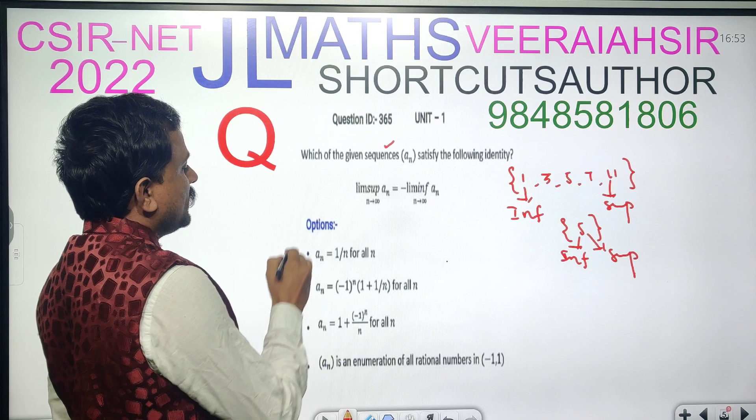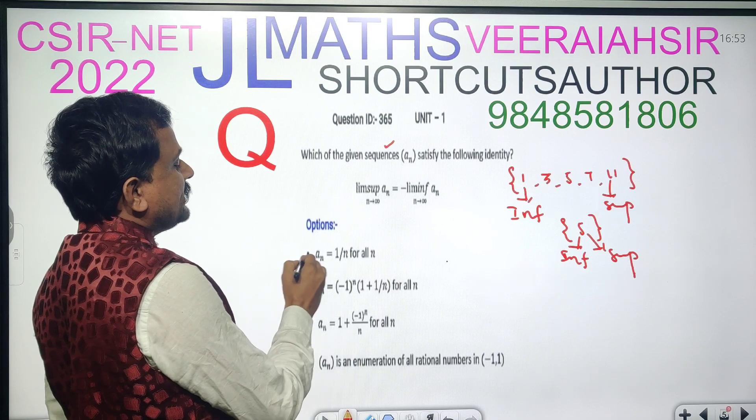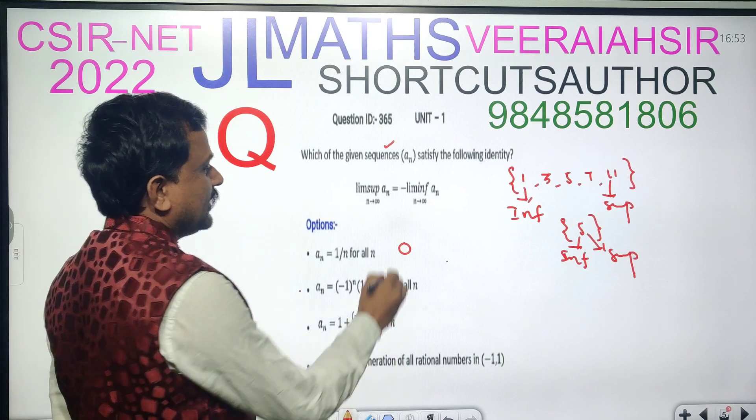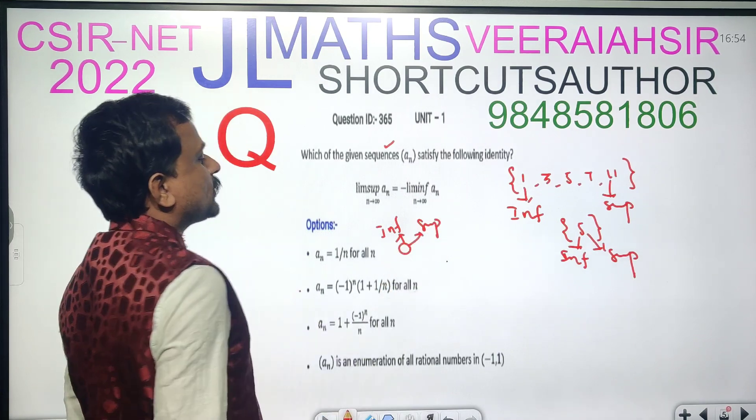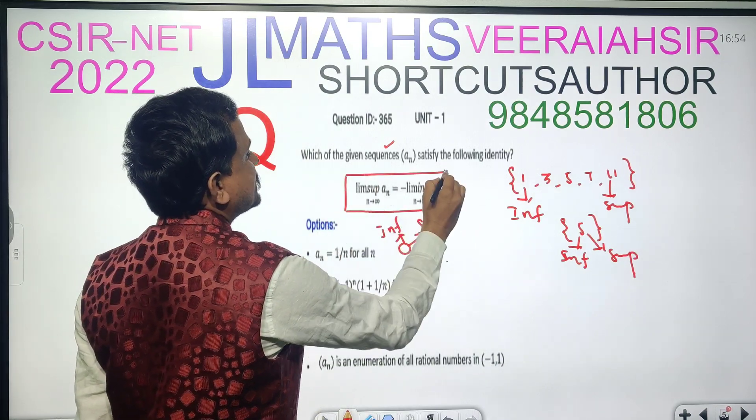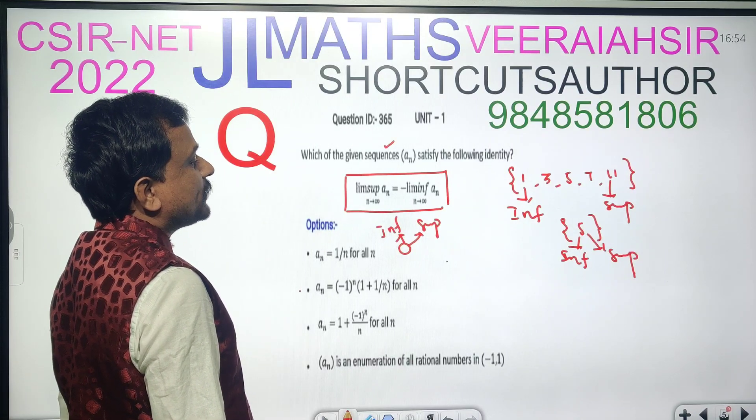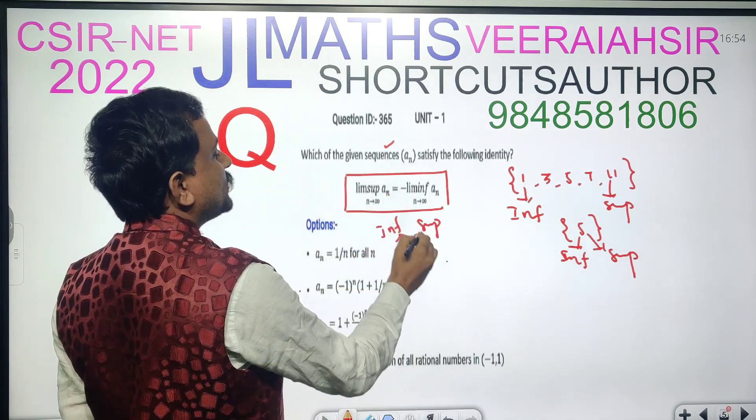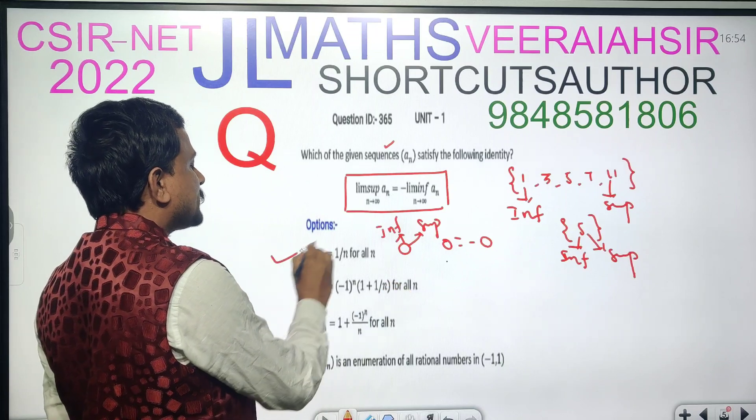Now, first of all, we check out option A, applying limit N to infinity An is equal 1 by N, 1 by infinity. That is 0. Here, infimum is also 0, Supremum is also 0. Infimum is equal 0, Supremum is equal 0. Applying hypothesis condition, Limit Supremum N to infinity An is equal minus limit infimum N to infinity An. Minitra ma, 0 in ikada apply jesna atle, Supremum 0, Infimum kuda 0, 9, 0 is equal minus 0. Both are equal, kabatti, Ida answer hao tundi.